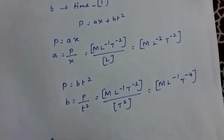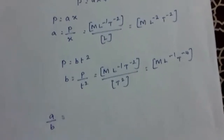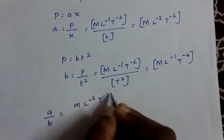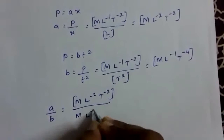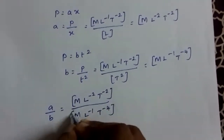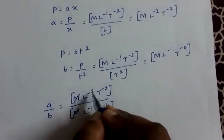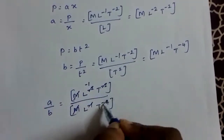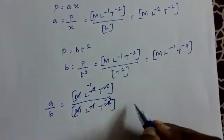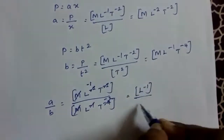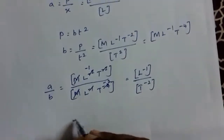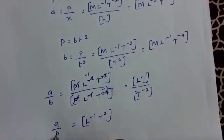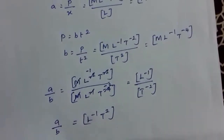Now we have to find a divided by b: M L raised to minus 2 T raised to minus 2 divided by M L raised to minus 1 T raised to minus 4. M and M cancel. For L: minus 2 minus (minus 1) gives L raised to minus 1. For T: minus 2 minus (minus 4) gives T raised to 2. So, a by b is equal to L raised to minus 1 T squared.